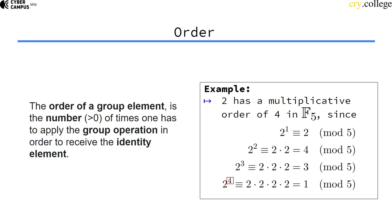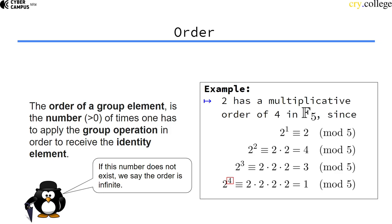The order is a positive number greater than zero. If this number doesn't exist, if no matter how often I apply the group operation to the element it never yields the identity element, then we say this element has an order of infinity.